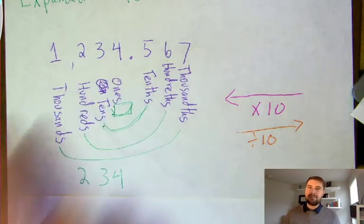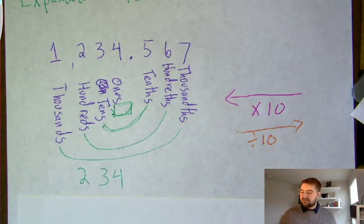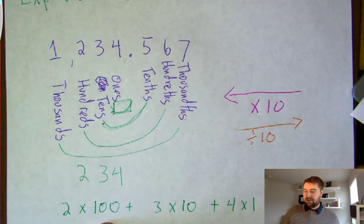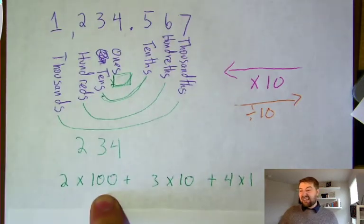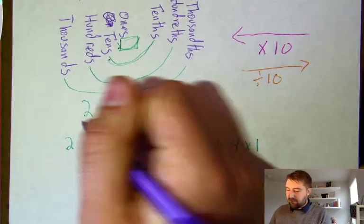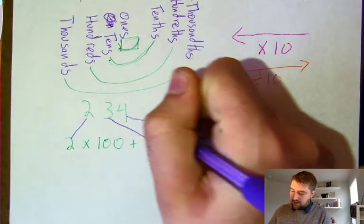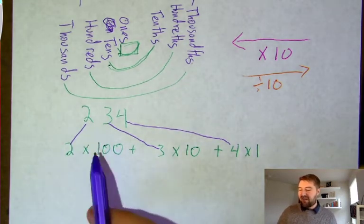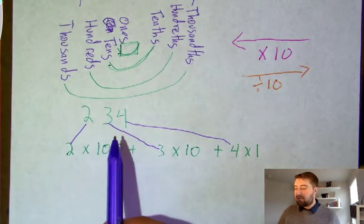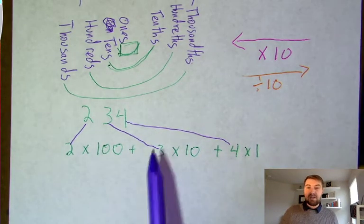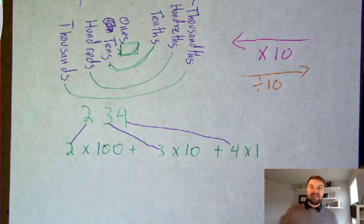That whole number is 234, taken right from our number above. As we do expanded form, we're going to multiply each digit by the place value it's in—breaking the number apart into each digit: our two, our three, and our four. The two is in the hundreds place, so we multiply two times one hundred. Then three times ten, and four times one, because four is in the ones place.